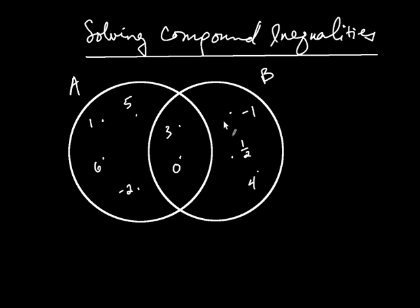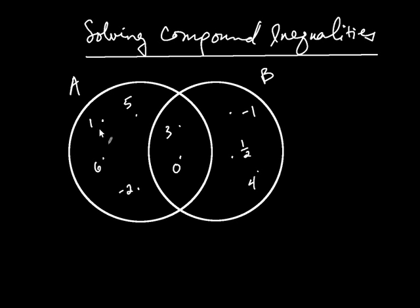Let's talk about solving compound inequalities. I've started off with two sets here, called A and B. Set A consists of everything inside this circle — these six numbers.